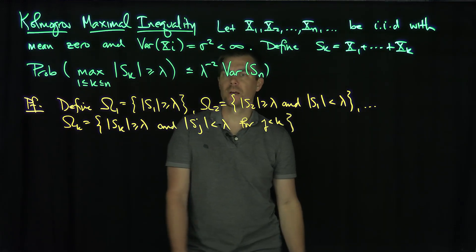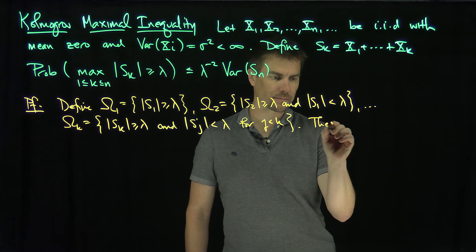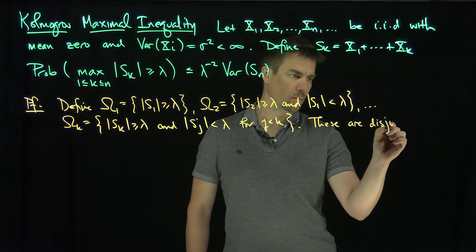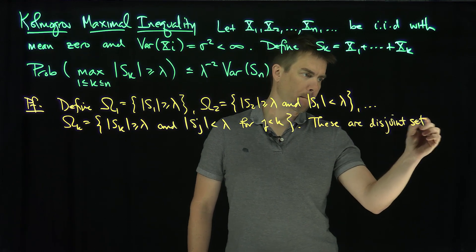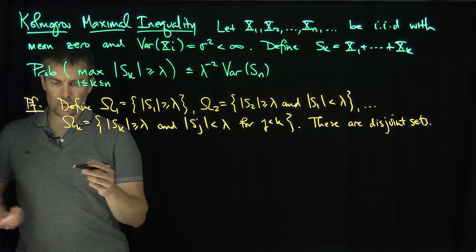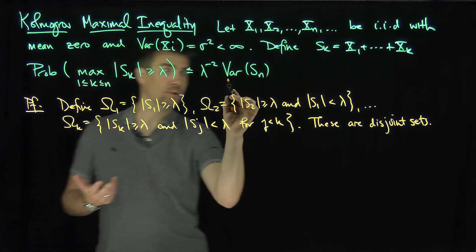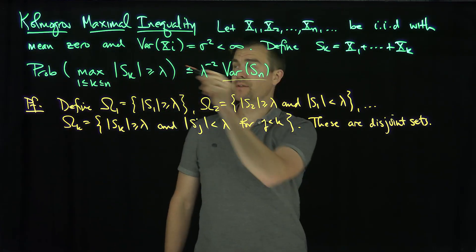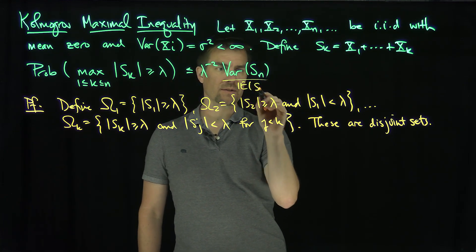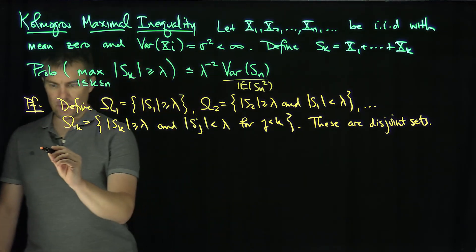Notice that these sets are disjoint. Now here's the idea: we're going to compute the expected value of sn squared, which is exactly the variance. Since these have mean zero, the variance is just the expected value of sn squared. So let's compute the expected value of sn squared.